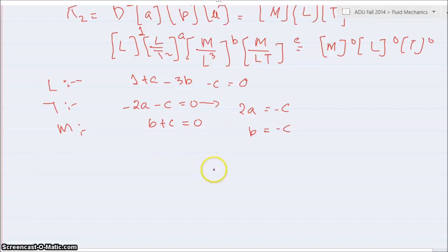So this equation can be written as 2a is equal to minus c, and this can be written as b is equal to minus c. So we have a is equal to minus c by 2. Taking this equation, 1 plus minus c over 2 minus 3c is equal to 0. So 3 by 2 c is equal to 0.